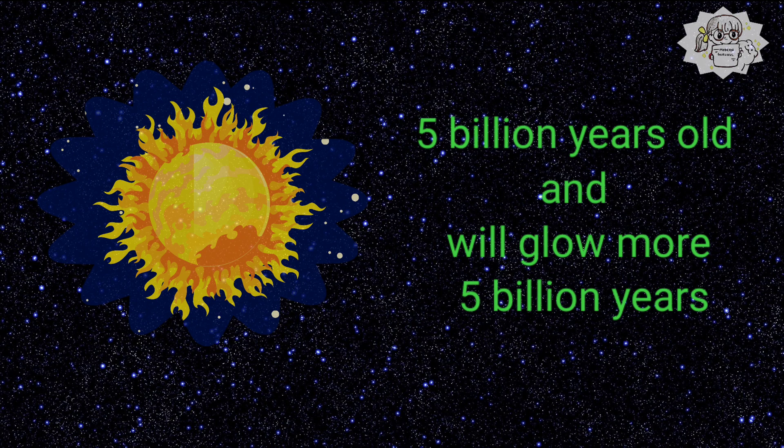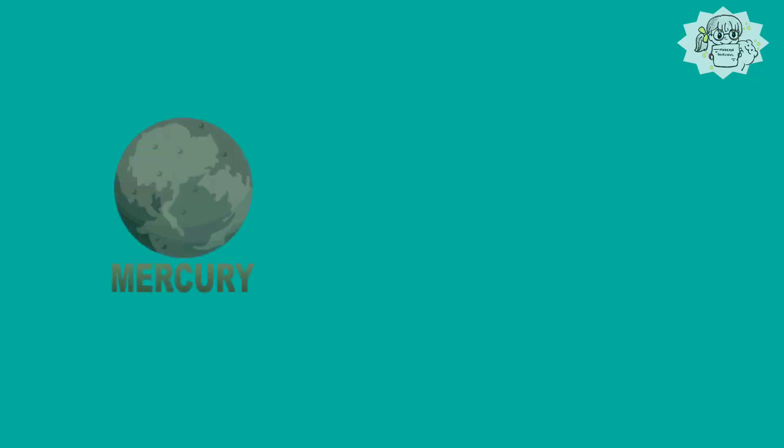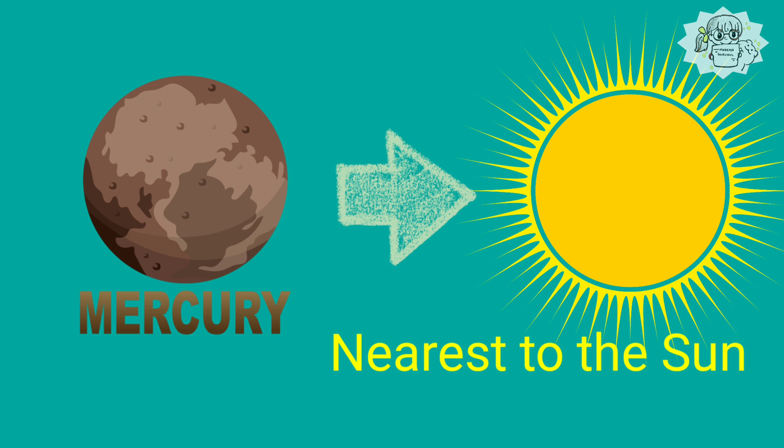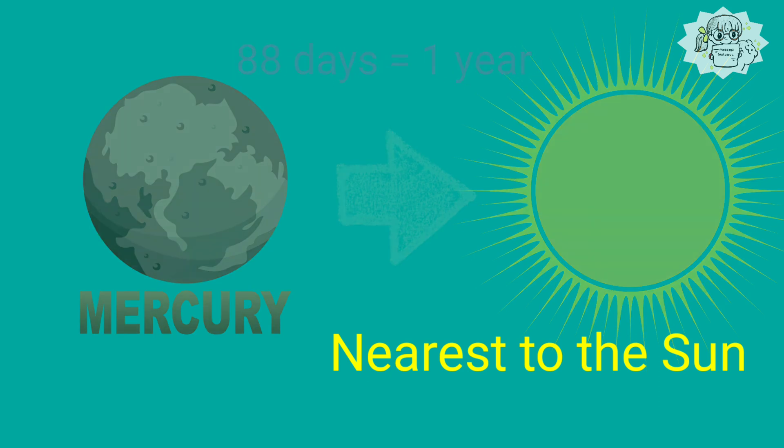Mercury is the nearest planet to the Sun. Since Mercury is the closest planet to the Sun, it moves faster than any other planet, traveling at an average speed of nearly 48 kilometers per second and completing an orbit in just under 88 days.